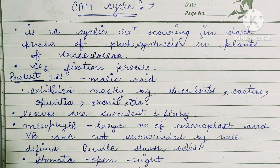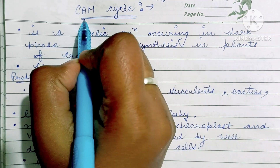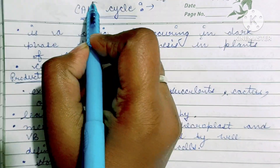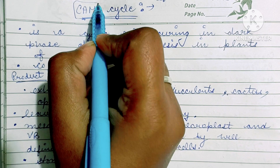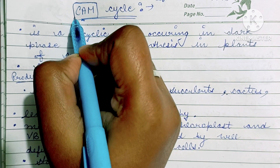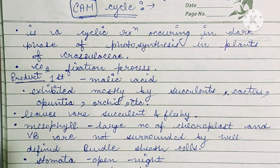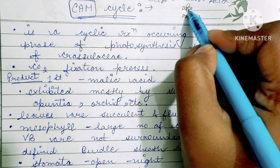Hello and welcome back guys. Today our topic is CAM cycle. CAM cycle is the dark phase of photosynthesis. This cycle runs in the dark phase of photosynthesis.